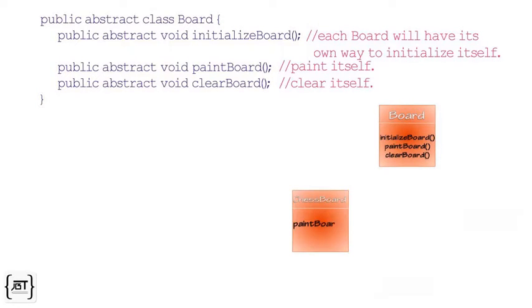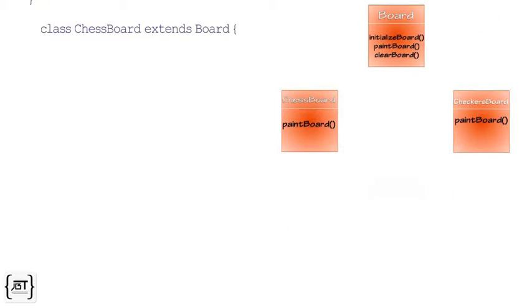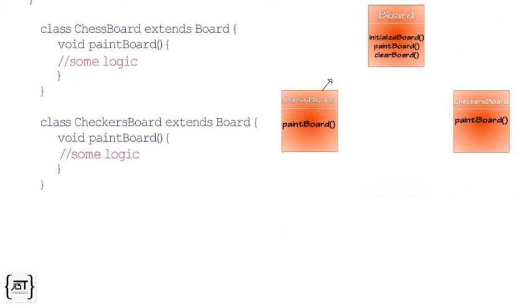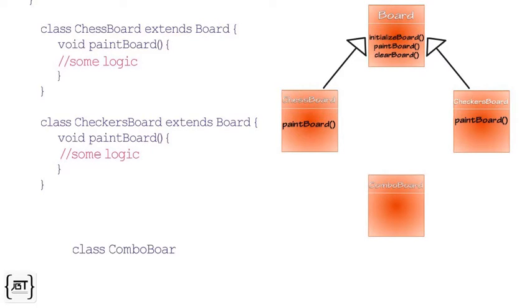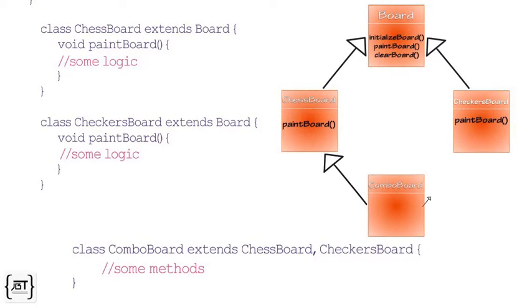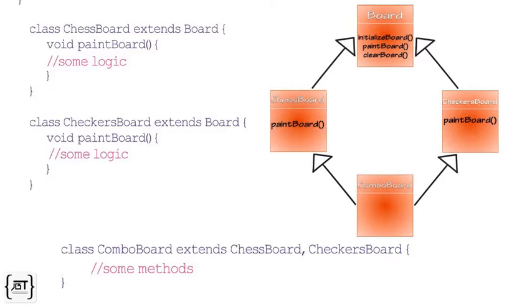Classes ChessBoard and CheckersBoard implement the paint method properly according to their requirements. Now, a class ComboBoard extends both ChessBoard and CheckersBoard.